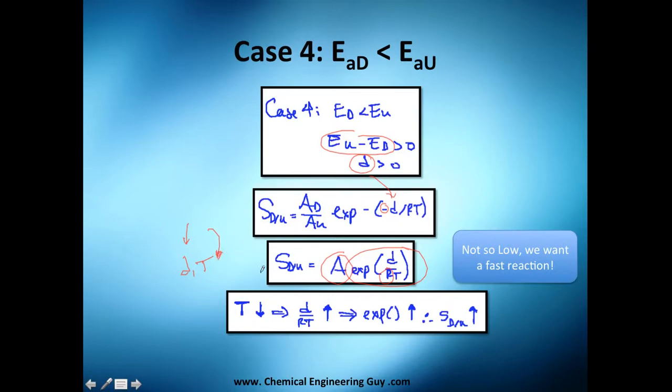If we decrease temperature, we're going to increase this number. If we increase this number, we're going to increase the exponential, and if we do that, we're going to end up with an increase in selectivity.